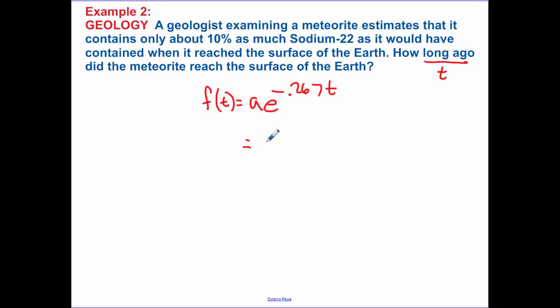So if my initial amount is a, and we are looking to find 10% of what originally existed, only about 10% as much as it originally existed. So again, if I divide by a on both sides, the a's cancel. So I have 0.1 = e^(-0.267t).